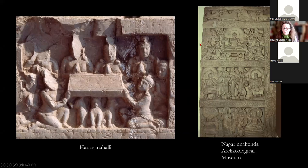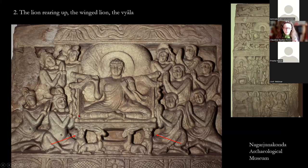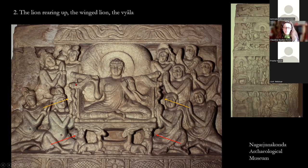Here you have a panel from Kanaganahalli where you see in fact the real lion supporting the Simhasana. And here a slab from Nagarjunakonda — in detail you have the Buddha seated on a real throne, really above the monks around him, protected by the throne, which is supported by two lions. You also have other lions standing up, rearing up, supporting the armrests, and some are in the back supporting the lintel of the throne.